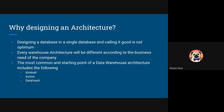The second one is the Inmon architecture, which is called top-down. You start from whatever data you have and convert it into the data warehouse where you normalize the entire data. Then you start to have different data marts which are provided for the company's different requirements, and from there you can build your different data warehouse architectures.